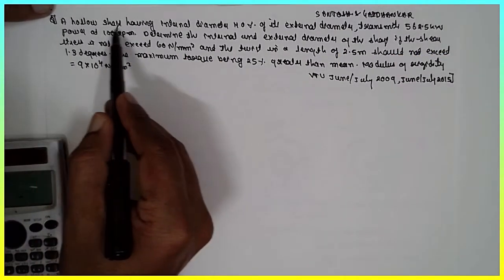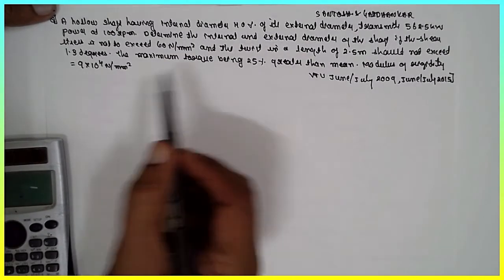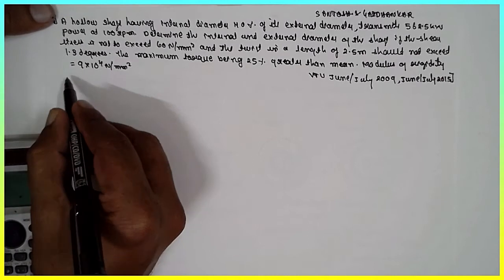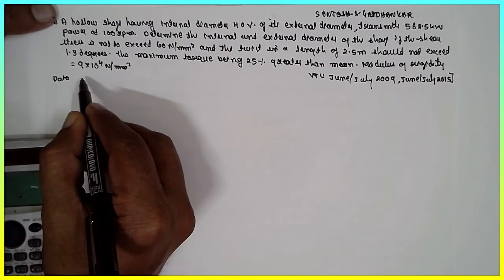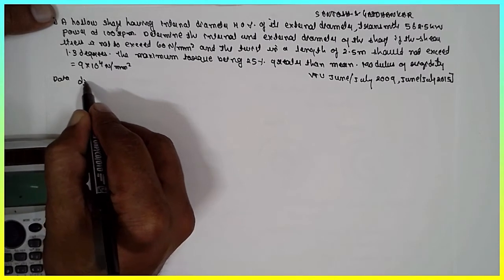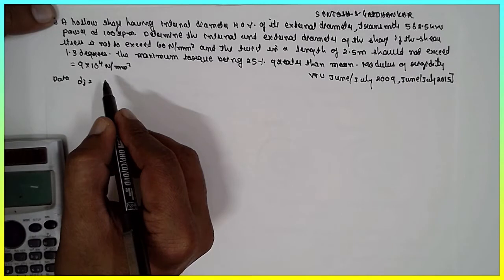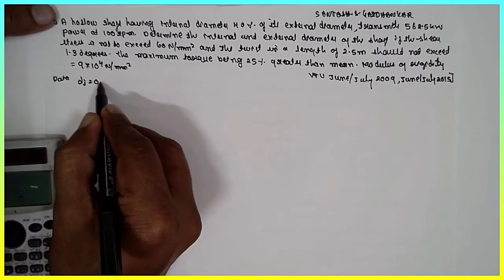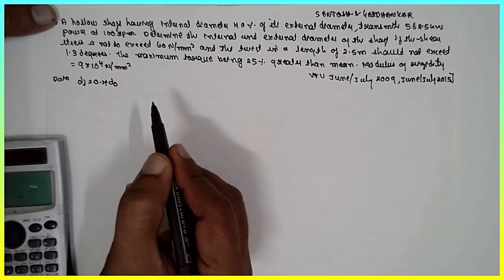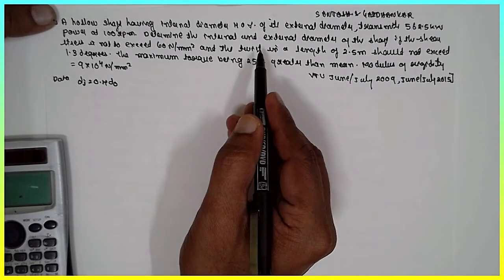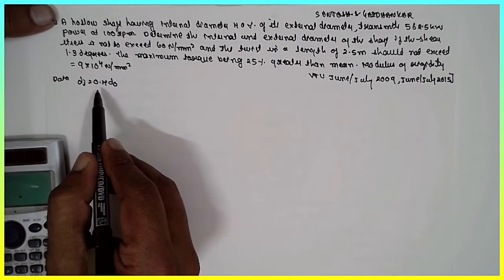This is the problem. A hollow shaft has an internal diameter that is 40% of the external diameter. So Di = 0.4 D0, obtained by computing 40 divided by 100.